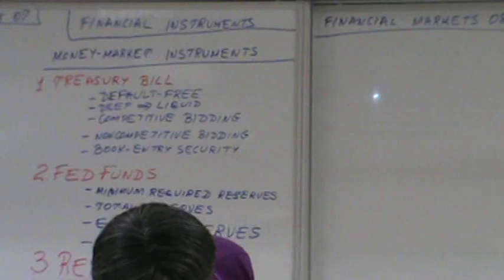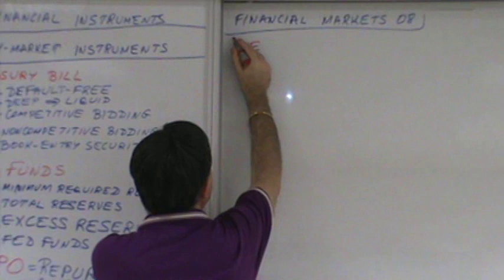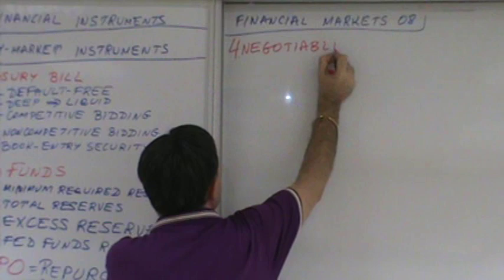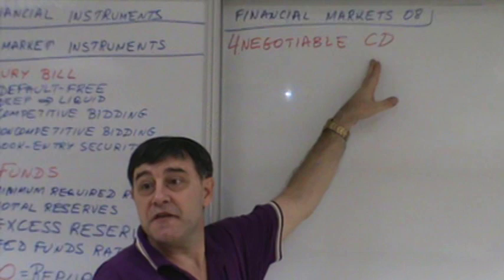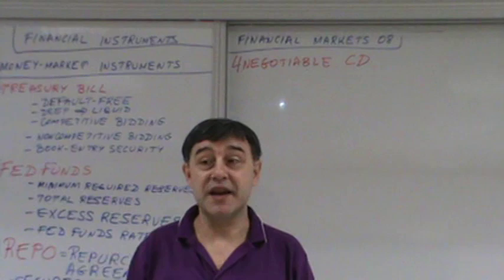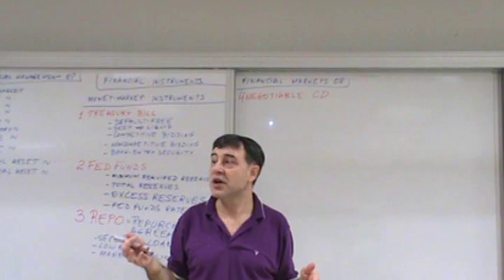Number four will be negotiable CD. I already covered this a while ago. CD simply means certificate of deposit. Certificate of deposit is simply a deposit at a depository institution.